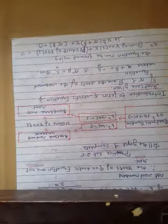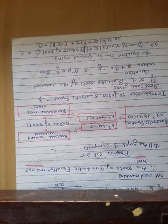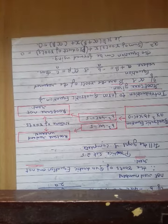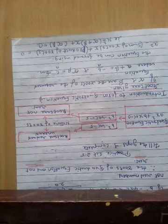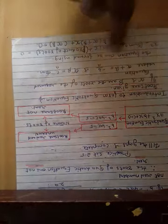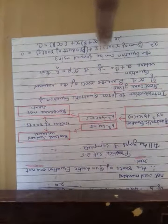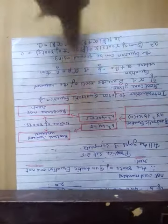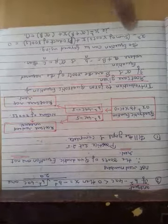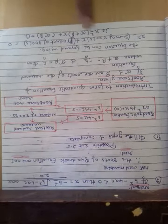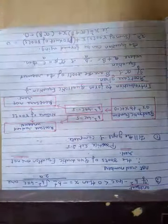अब second sum solve करने से पहले थोड़ा theory और देख लेते हैं। If alpha and beta are the roots of the required equation, where alpha + beta = -b/a and alpha × beta = c/a, then the equation can be formed using these values.